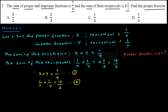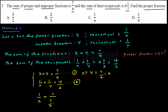Substituting into equation two: 1 over x plus 1 over (7 over 4 minus x) is equal to 14 over 3. We have only one variable x in this equation, so we can solve for x.